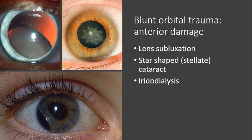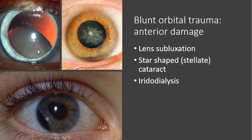Here are some more images of anterior blunt orbital trauma. Lens subluxation is shown here — you can see the dilated pupil, there's the iris, and here is the lens, which has fallen down out of position. You can kind of see the zonules, and it should be right up here, but it's fallen down into the chamber. This is showing a star-shaped or stellate cataract, which can occur as a result of blunt trauma. The image on the bottom shows iridodialysis — the separation or tearing away of the iris from its attachment to the ciliary body — causing a distortion to the pupil shape.